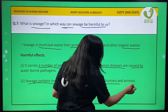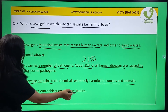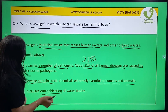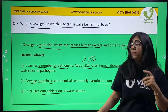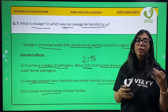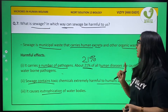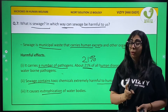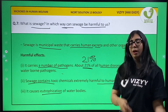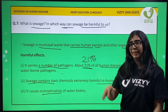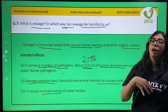Lastly, sewage causes eutrophication of water bodies. To summarize, we must remember three things: one, 21% of all human diseases are waterborne. Wherever feces are present, flies will sit on them, become carriers, and bring disease back to us — the fly here acts as a vector.